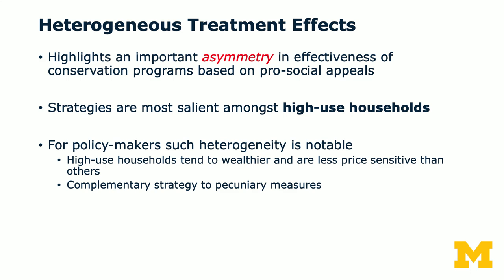The technical advice is not significant and the effect size is also quite low. But if you look at the weak norm and the strong norm — especially the strong norm — you see that the gray bars are much higher than the black bars, meaning the effect on high users is much stronger than the effects on low users. This highlights an asymmetry in the effectiveness of conservation programs based on pro-social appeals — the messages are most salient among high use households. This is really good because in the past we've seen that high use households are not price elastic, since they're typically wealthier households. If you raise the price of water by 30%, they don't really care and that doesn't affect how much water they use.